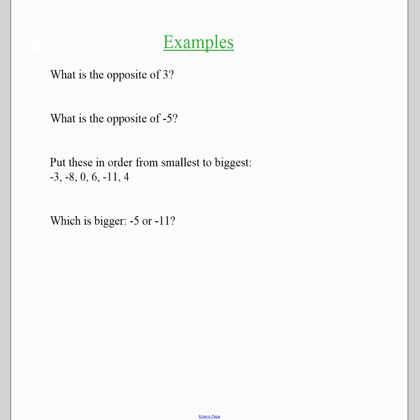So let's look at some examples. Make sure that you understand what you've learned about in terms of an introduction to integers. So what's the opposite of three? The opposite of three is negative three. What's the opposite of negative five? The opposite of negative five is positive five.